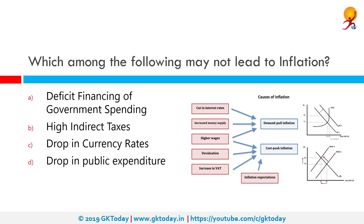Which among the following may not lead to inflation? The correct answer is drop in public expenditure. Inflation means there is a sustained increase in the price level. The main causes of inflation are either excess aggregate demand, or economic growth is too fast, or cost-push factors like supply-side factors.